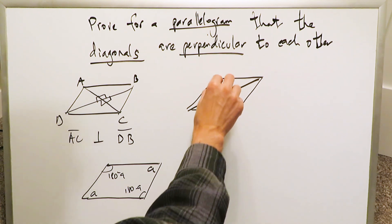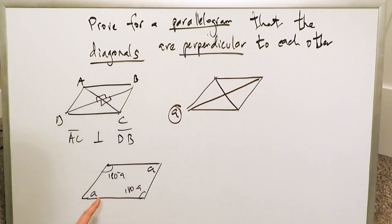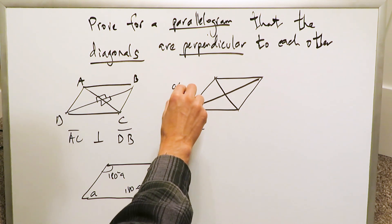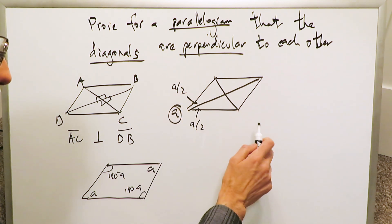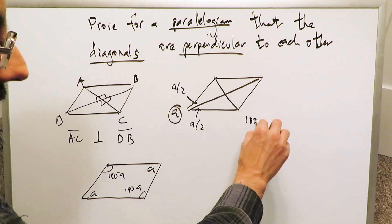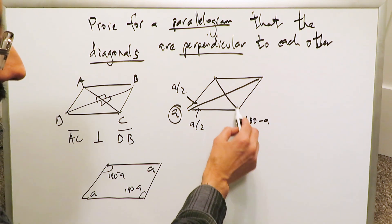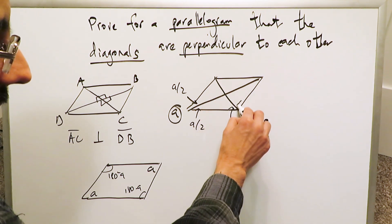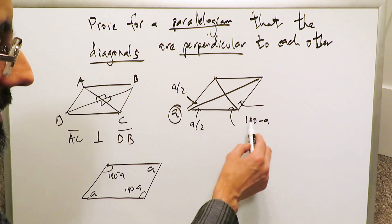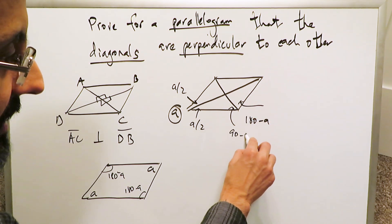When I draw the diagonals, what happens here, what was originally the A angle has been split into two parts, A over 2 and A over 2. And this obtuse angle, which you know to be 180 minus A, when you do the diagonal and you bisect that angle, you've generated two angles, which are half of this. You'll have 90 minus A over 2, and you have 90 minus A over 2.